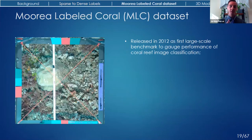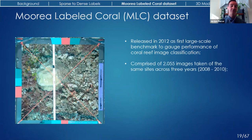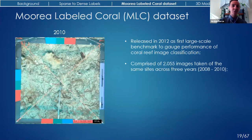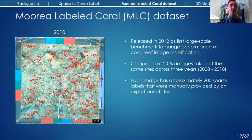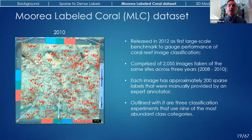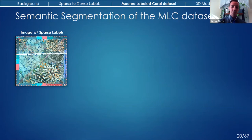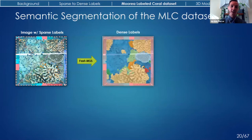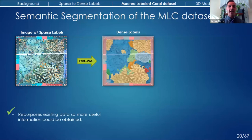The MLC dataset was released in 2012 and currently serves as the most widely used benchmark dataset for coral reef image classification. It consists of about 2,000 images taken of the same sites across three different years — 2008, 2009, and 2010. For each image, there are about 200 sparse labels provided manually by a trained expert. Because this is a benchmark dataset, it also outlines three patch-based image classification experiments that use nine of the most abundant class categories, making up about 92% of all sparse labels.